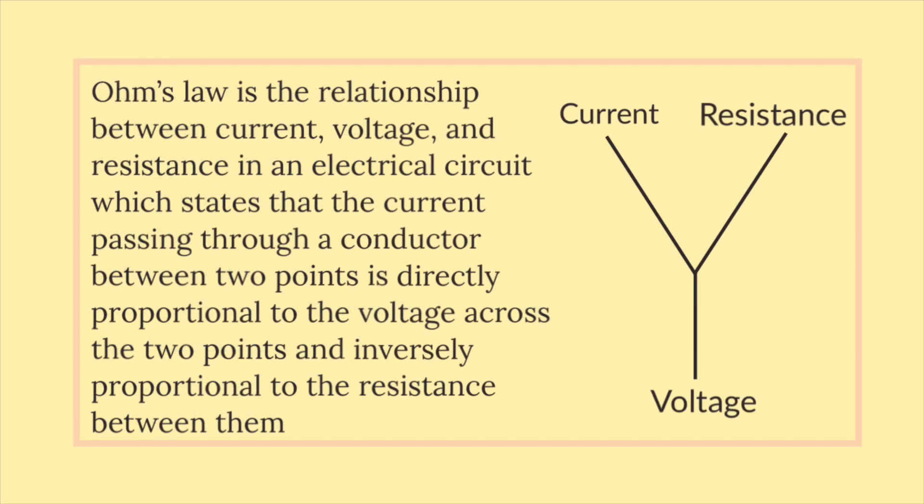Ohm's Law is the relationship between current, voltage, and resistance in an electrical circuit, which states that the current passing through a conductor between two points is directly proportional to the voltage across the two points and inversely proportional to the resistance between them.